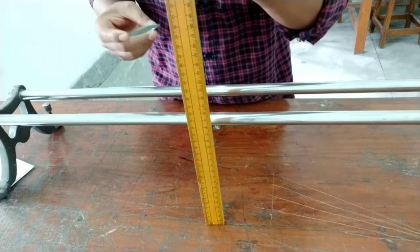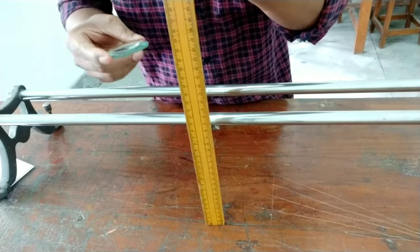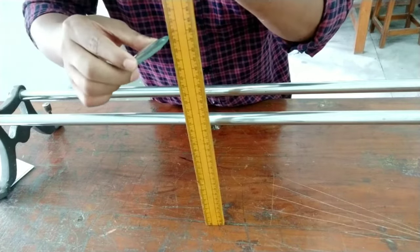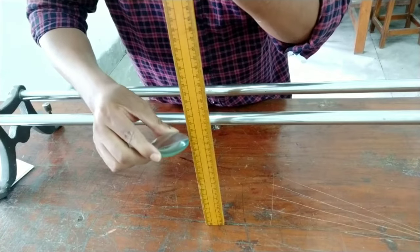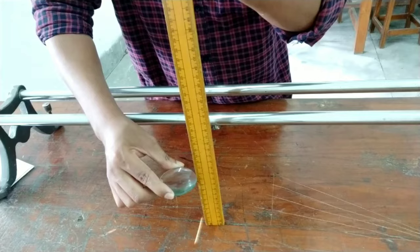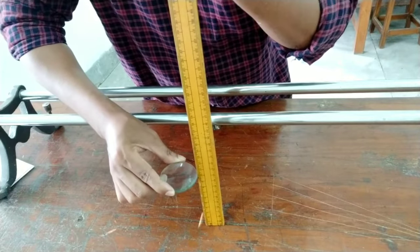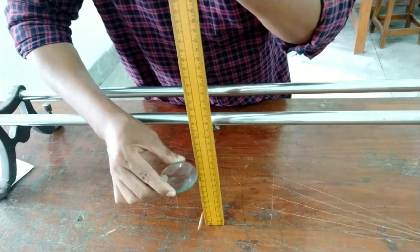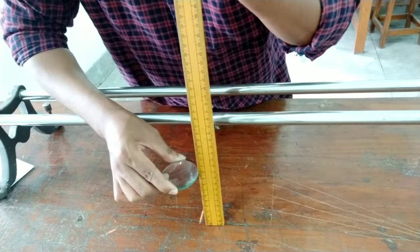See here, this is the clear image. So the length is 10 centimeter, length is 10 centimeter. So we can say the rough focal length of the lens is 10 centimeter.